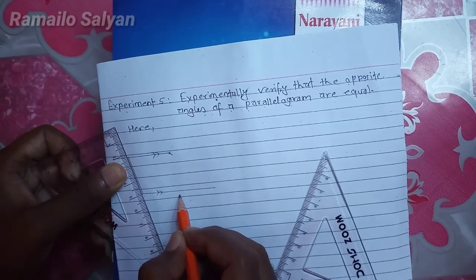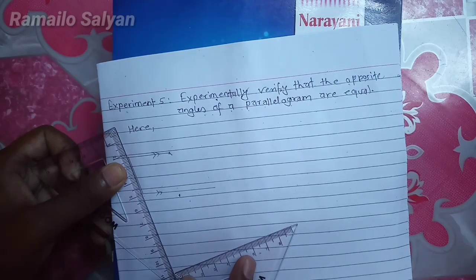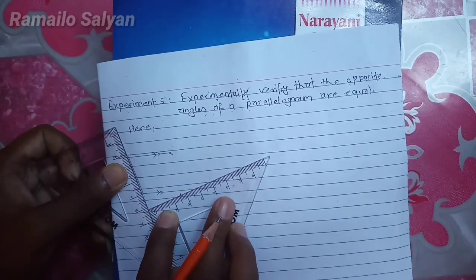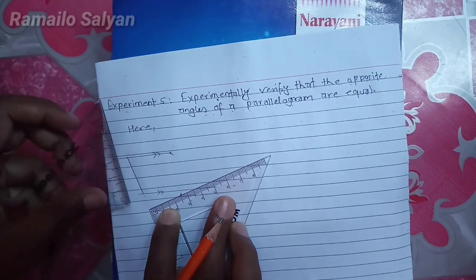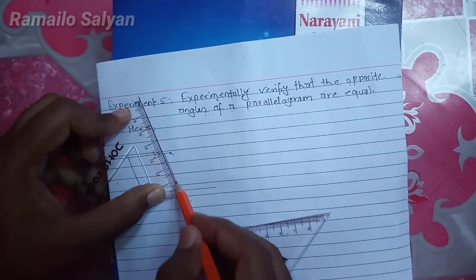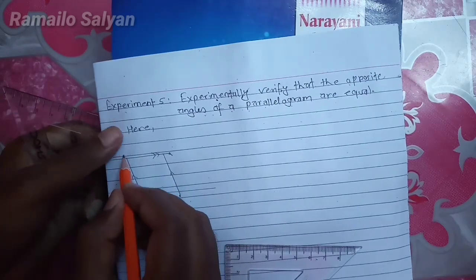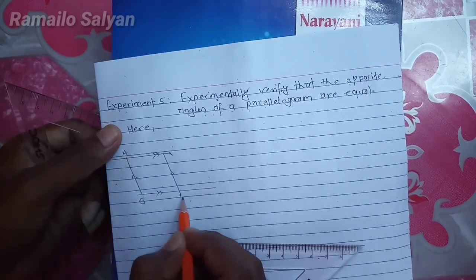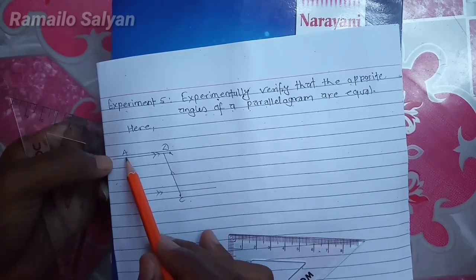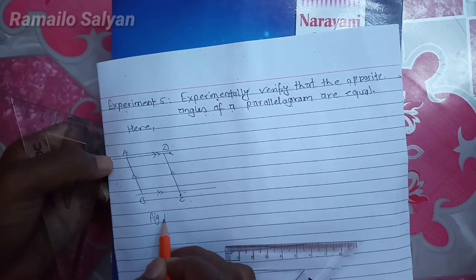Once again draw a line segment and mark a point anywhere above it. Start to move the square set from this tip towards the point, then take out the set and move from this tip towards the point. Draw the line segment — these two lines are also parallel to each other. Suppose ABCD is a parallelogram because its opposite sides are parallel: line AB is parallel to DC and AD is parallel to BC.